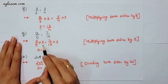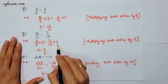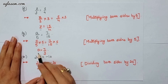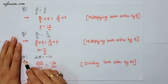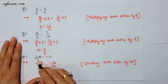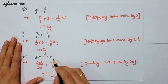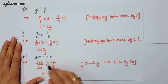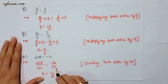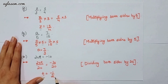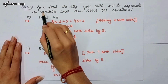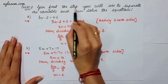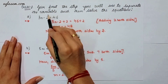The h part says 20t is equal to minus 10. Here we have to divide both sides by 20, and t will be minus 1 upon 2. Question number 3 says: give first the step you will use to separate the variable, and then solve the equations.